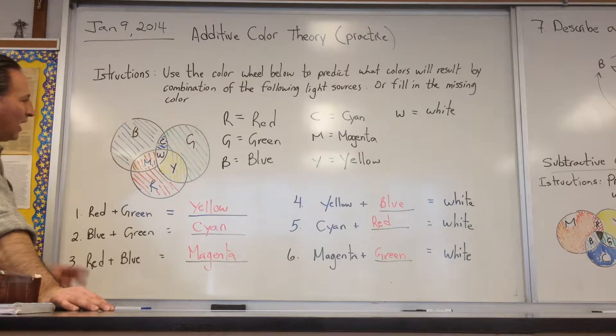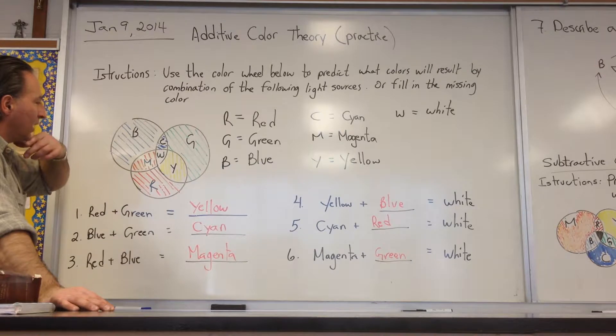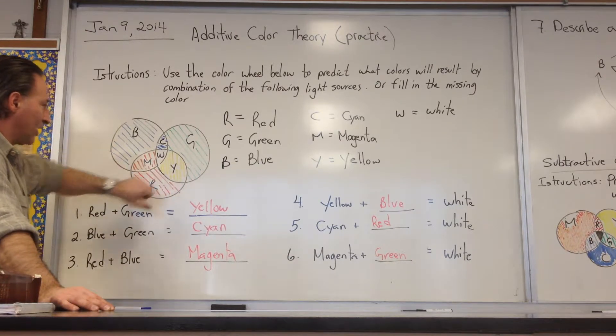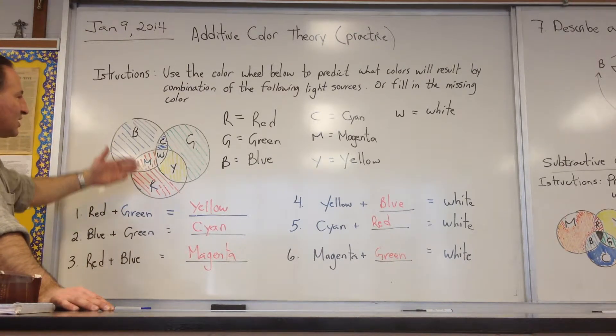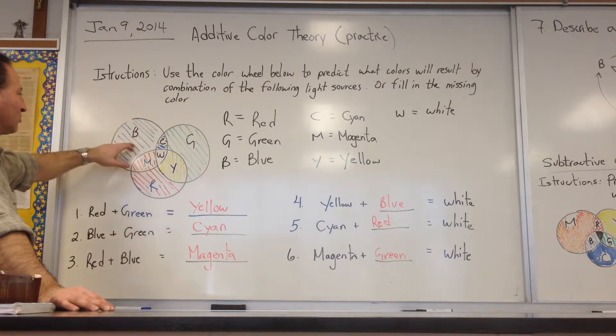Now, if you have yellow light, which is formed from the intersection of red and green light, what color is missing in order to get white light? The answer is blue.